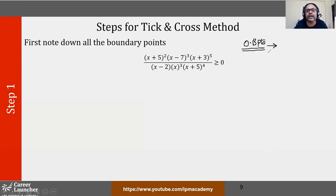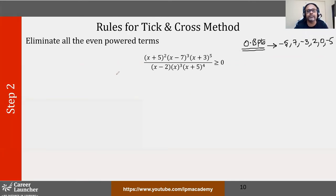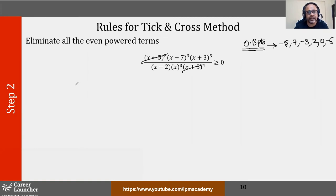The boundary points here are −5, 7, −3, 2, 0, and −5. Moving to step 2: eliminate all even power terms. Any bracket with an even power — straight away take it out, delete it. So I don't need those terms. My life became slightly easier. Any even power terms, throw them out. After step 2, I am left with: (x − 7)³ · (x + 3)⁵ divided by (x − 2) · x³, all greater than or equal to 0.